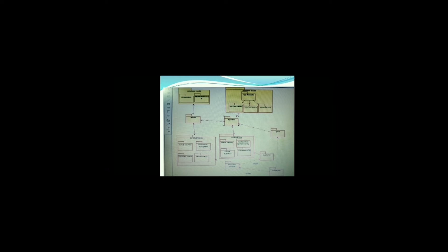We describe the package diagram with the help of an online bus management system example. Here we use two models: a database model and an application model. These boxes are the packages and these arrows show the dependencies among them. For example, the database model is itself a package and has two nested packages: database data access and data maintenance. Similarly, the business model has four nested packages: service stations, food companies, and security system.